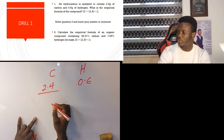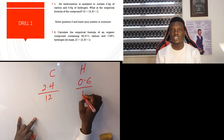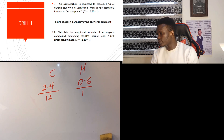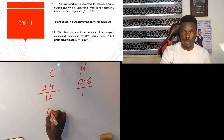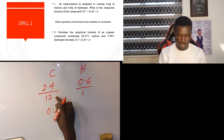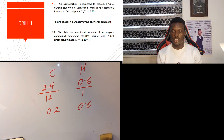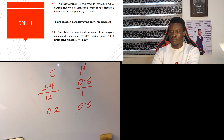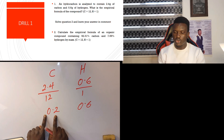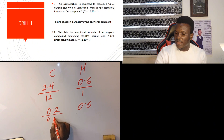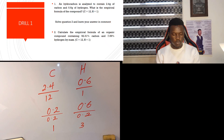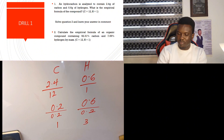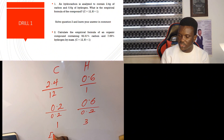Rule two: divide by the atomic masses. The atomic mass of carbon is 12, that of hydrogen is 1. So 2.4 ÷ 12 = 0.2, and 0.6 ÷ 1 = 0.6. Rule three: divide by the smallest ratio, which is 0.2. So 0.2 ÷ 0.2 = 1 for carbon, and 0.6 ÷ 0.2 = 3 for hydrogen. That means the empirical formula of this compound is CH3.